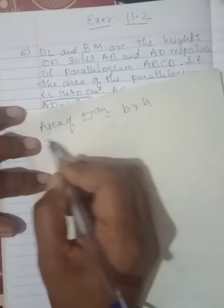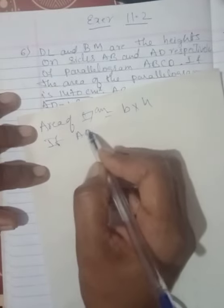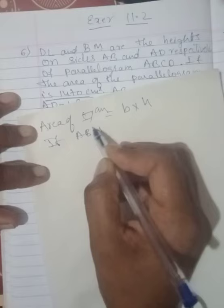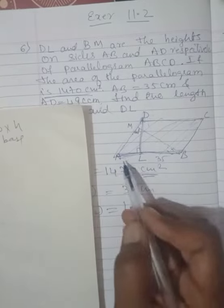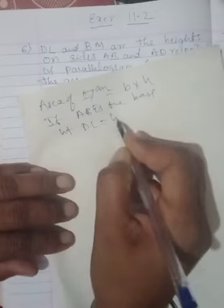If AB is the base, when AB is the base, then height is what? Height is, when AB is the base, height is DL. Am I right? AB base, DL is height. Height is DL, is the height.